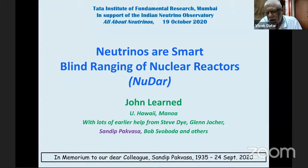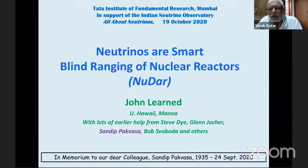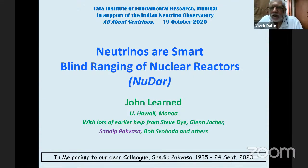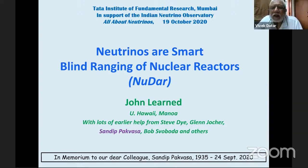He worked earlier in cosmic ray physics, and in particle physics when he was at SLAC and other places. He is a pioneer in starting the new field of astroparticle physics, mainly through his connection to neutrinos. He was the co-founder of the IMB experiment, primarily aimed at detecting proton decay, but which also found supernova neutrinos, atmospheric neutrinos, and the first hints of neutrino oscillation.